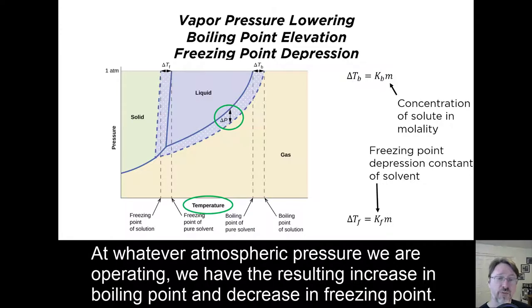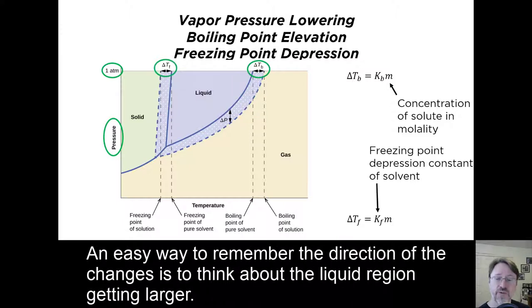At whatever atmospheric pressure we are operating, we have the resulting increase in boiling point and decrease in freezing point. An easy way to remember the direction of the changes is to think about the liquid region getting larger.